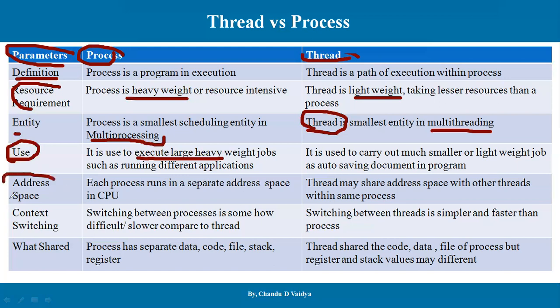If we talk about address space, each process runs in a separate address space in the CPU. We talk about base and limit. A process may run from, say, a hundred locations to a thousand locations — that is the address space. The entire content is available in the address space, and each process runs in a separate address space because they are separate independent processes.